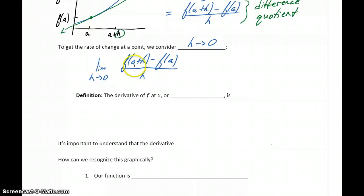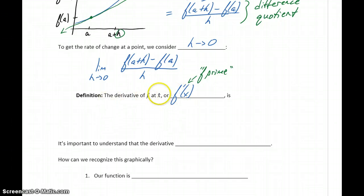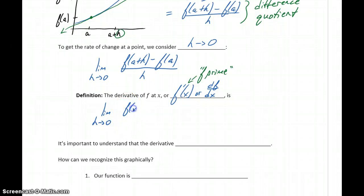We can generalize this for any value of x instead of a specific value a. The derivative of f at some value x, or at any value of x, can be notated as f prime of x. That f prime notation is shorthand for the derivative of f at x. Another notation is df over dx. To find the derivative, we take the limit as h approaches 0 of f of x plus h minus f of x divided by h, assuming that this limit exists.